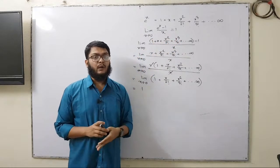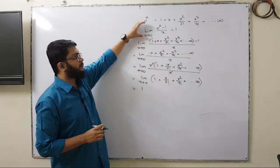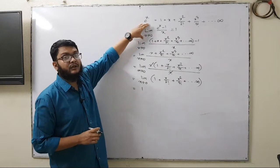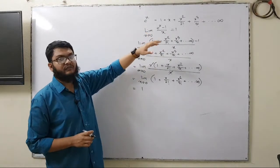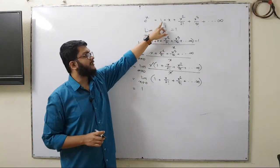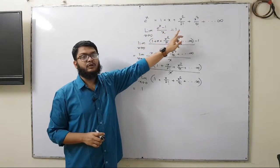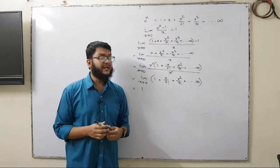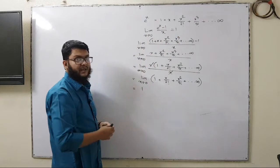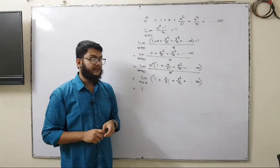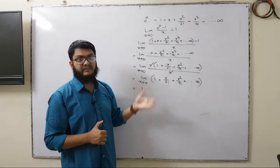From now onwards we can use this as a formula: limit x tends to 0 of e to the power x minus 1 divided by x equals 1. We have seen how it becomes 1 through the derivation. I hope you understand the derivation part. If you have any questions, please let me know in the comment section.